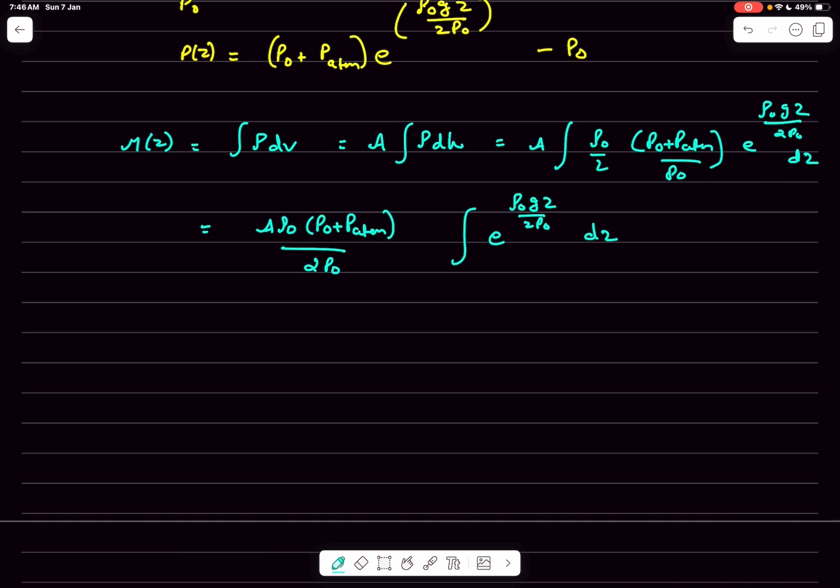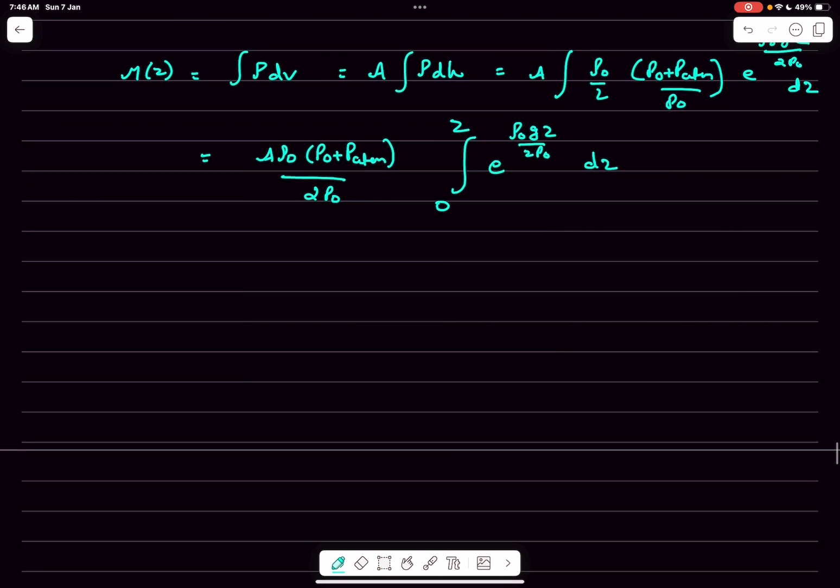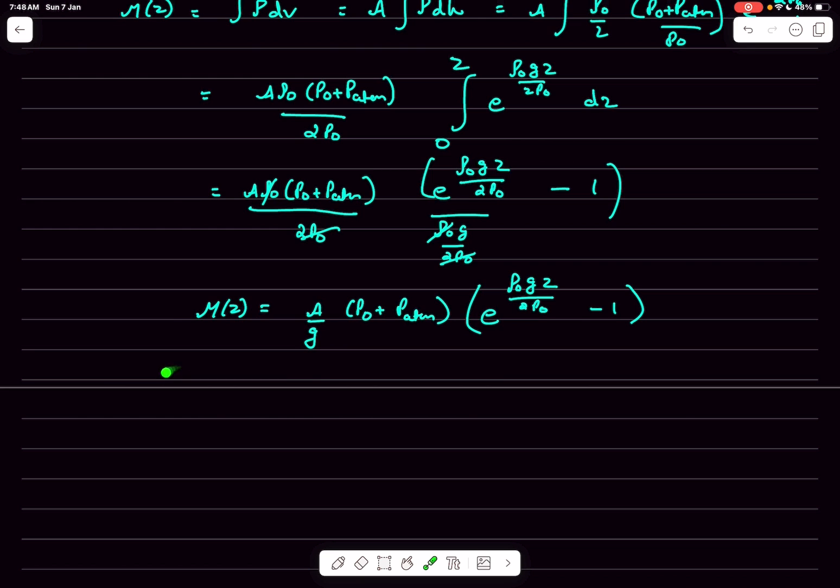The integral simplifies into this expression. So if we integrate this expression from 0 to z we'll get the function. After completing the integration you'll get the variation of the mass of the fluid with the height.